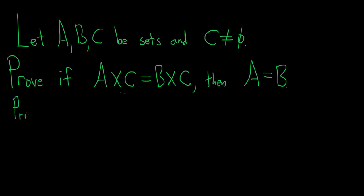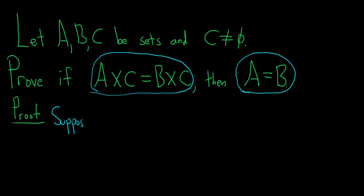Proof. This is an if-then statement. We start by assuming this piece here is true and then show that this piece is true. So we'll write: Suppose A cross C equals B cross C. Now we have to show that A equals B. Claim that A equals B.